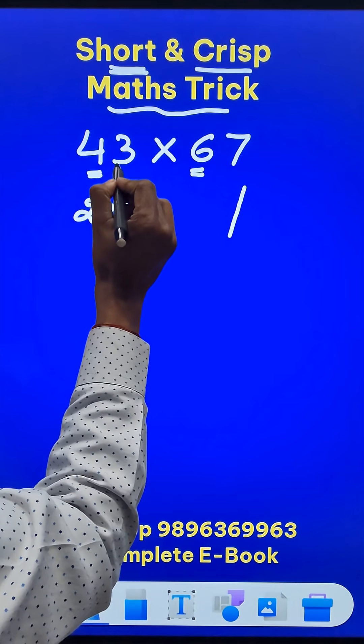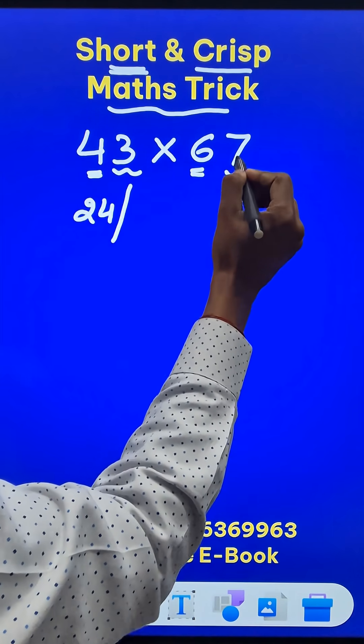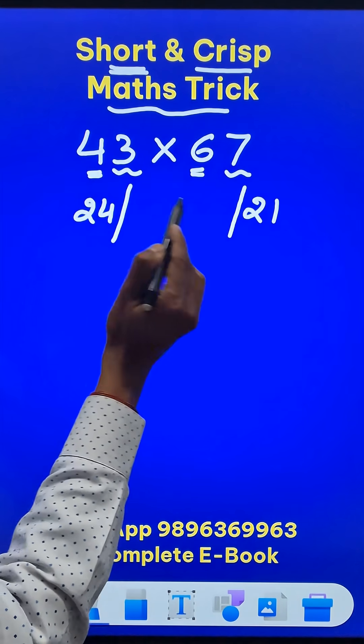In the third part, multiply the second digits, that is 3 times 7 which is 21. Now what do we write in the middle?